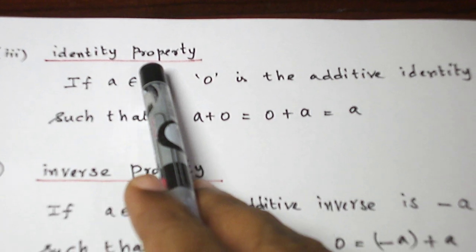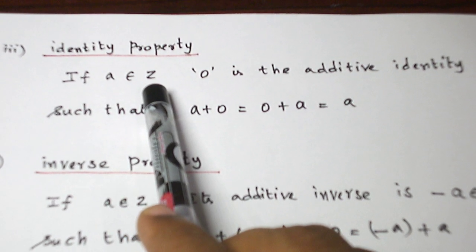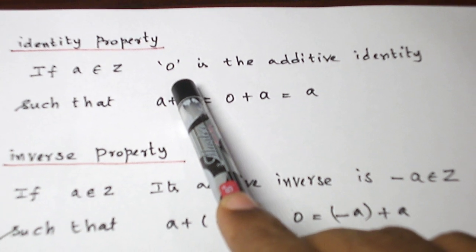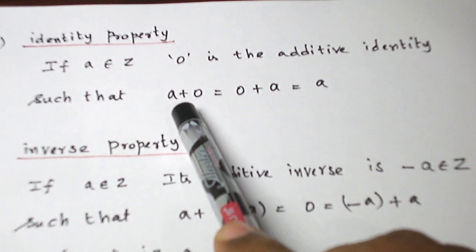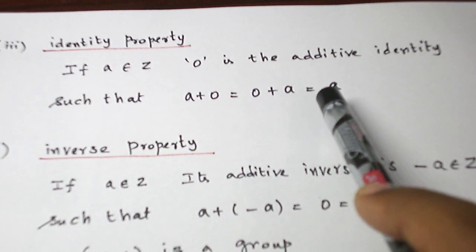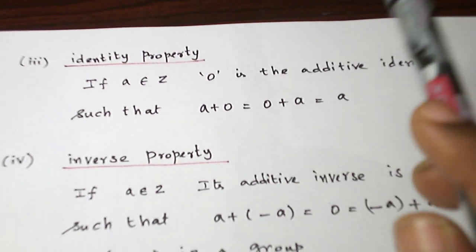Third one is identity property. Whenever we take an element from the integer set, the additive identity is 0. So A plus the identity element is A, and identity element plus A is also A. We have proved identity property there.